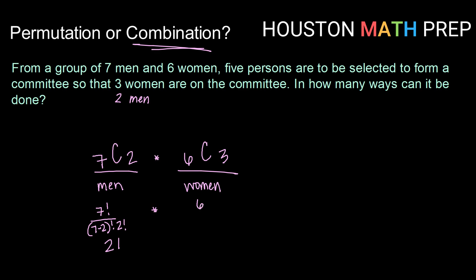For the women, that would be 6 factorial divided by 6 minus 3 factorial times 3 factorial. That can be reduced and calculated to be 20. Now, we would multiply the number of ways we can choose the men with the number of ways we can choose the women. So 21 times 20 gives us 420 ways to choose the members of this committee.